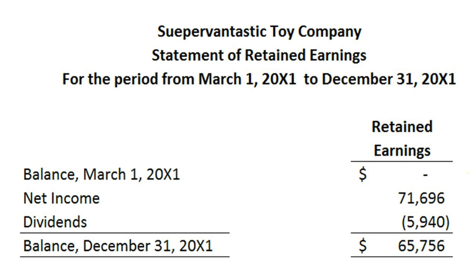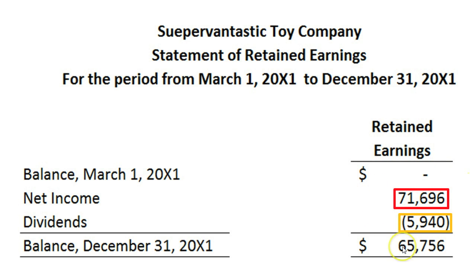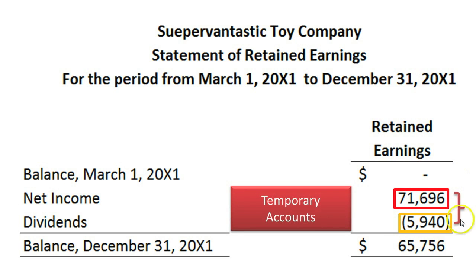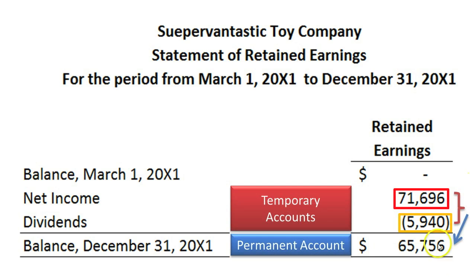This is the statement of retained earnings that we prepared in the prior video on preparing the financial statements. You should see that we have net income — which is all the revenues minus all the expenses — and we have the dividends. Because this was a brand new company, we started with zero retained earnings, added net income, and deducted dividends to arrive at the ending retained earnings balance. These accounts between the beginning and ending retained earnings balance are all temporary accounts.